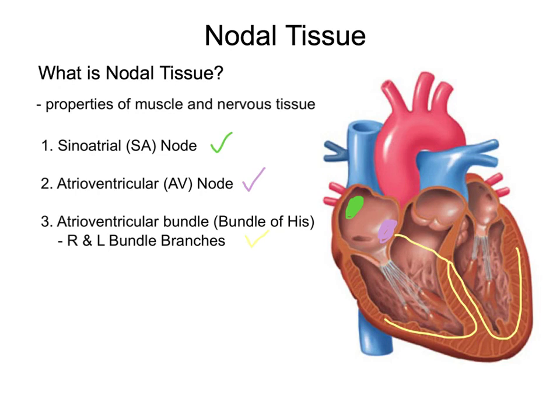Finally, the right and left bundle branches will create smaller branches called Purkinje fibers. Purkinje fibers extend up into papillary muscles and aid in the closing of atrioventricular valves.